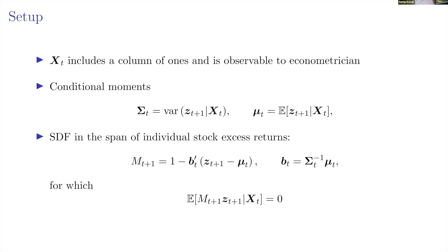These moments are conditional on the information set that includes characteristics X-t, and mu is the vector of mean returns conditional on X. The fact that we condition on this information set is important — we observe only these characteristics, and within this information set we study how to get to the mean-variance efficient portfolio. This paper is not about omitted factors; it's about achieving mean-variance efficiency within the context of the information you have.